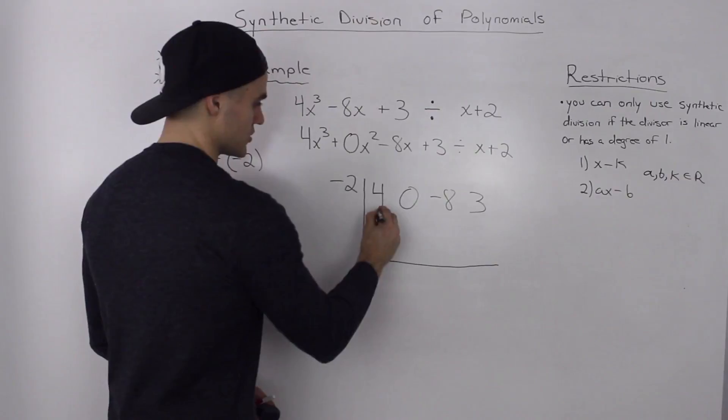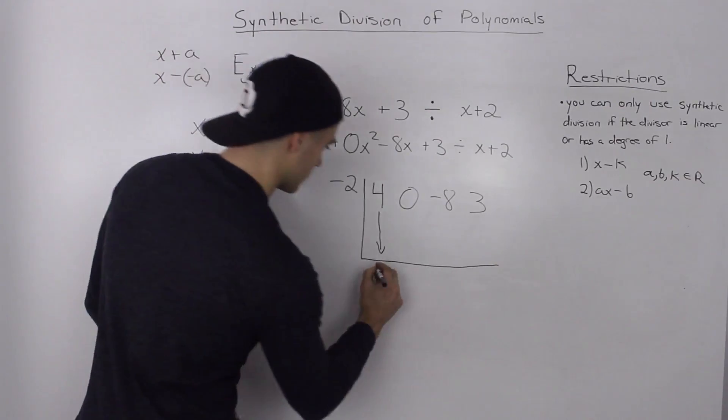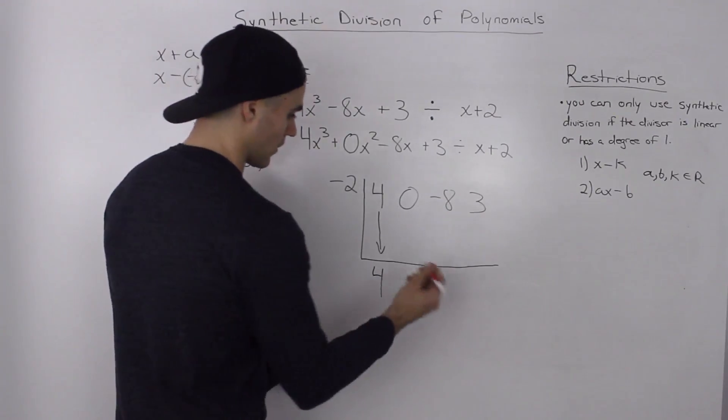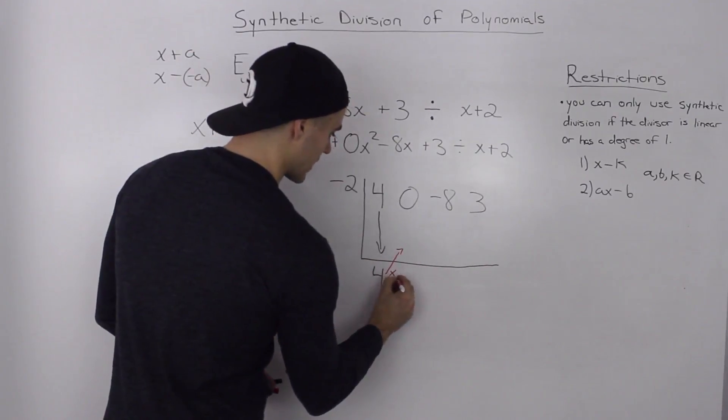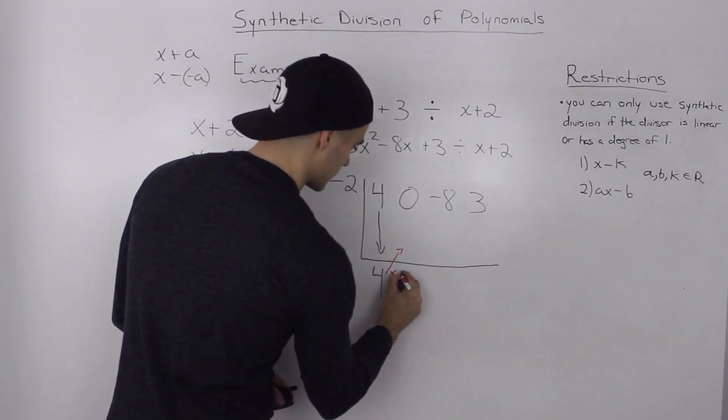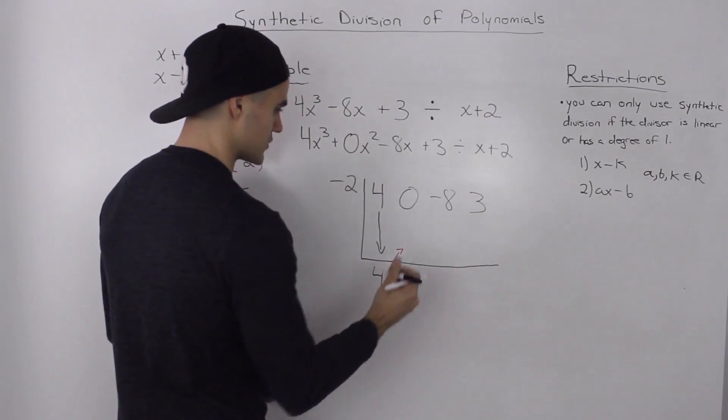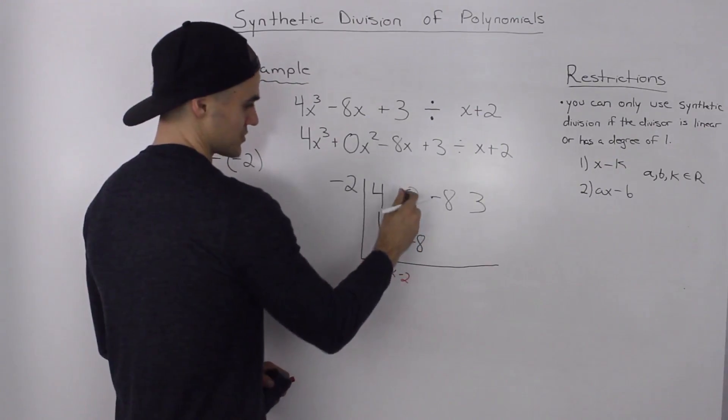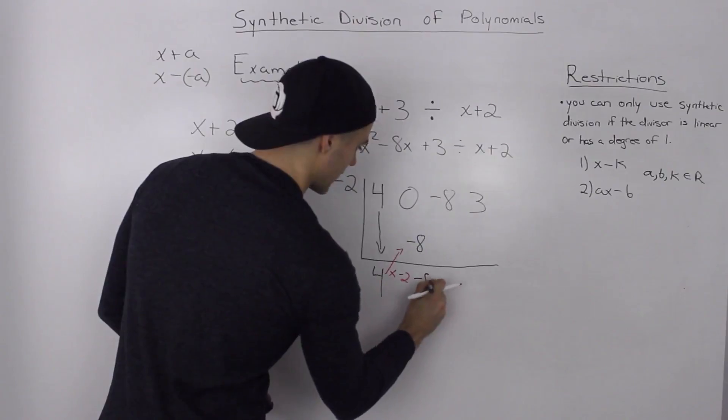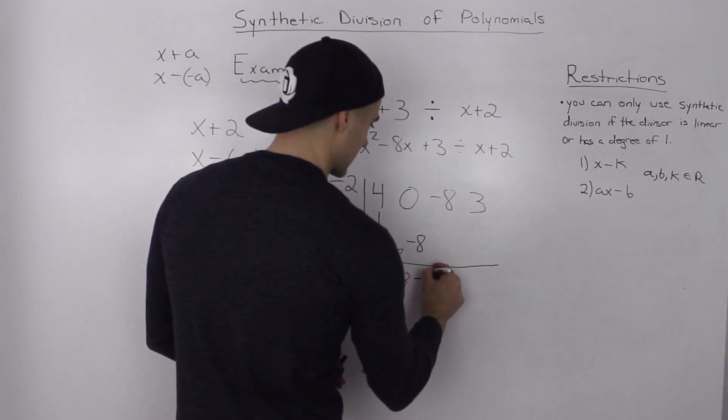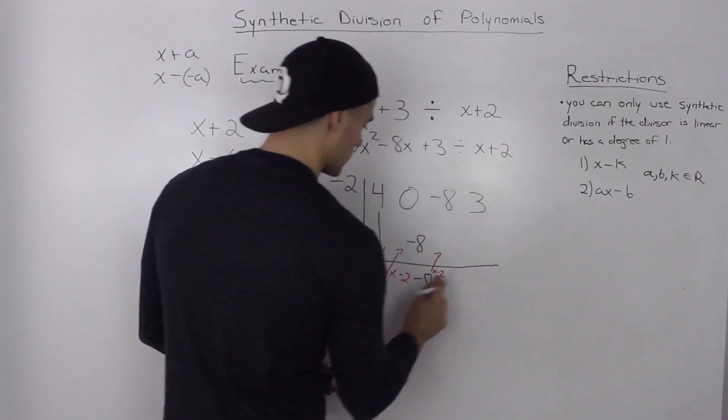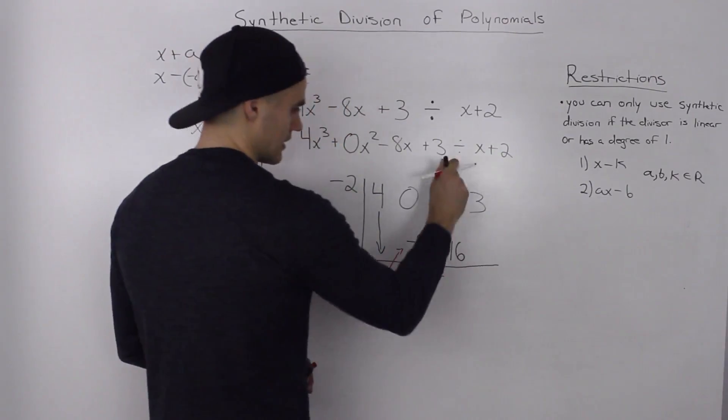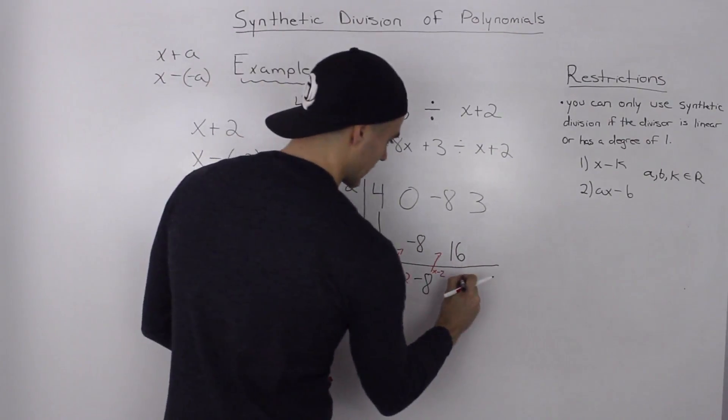Now, what's the first step always? We just bring the 4 down as it is. So we would have 4 here. And then what's the next step? We take this 4 and we multiply it by whatever our k value is. In this case, it's negative 2. So 4 times negative 2, that gives us negative 8. And then we just add this column here. So 0 plus negative 8, well that just gives us negative 8. And then same thing applies. We take this negative 8, multiply it by our k value of negative 2. So negative 8 times negative 2, that gives us positive 16. Then add this column here. So negative 8 plus 16, that gives us 8.